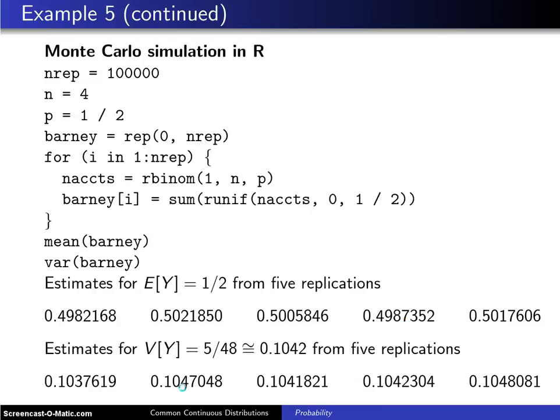On the next page is a Monte Carlo simulation in R to see if this mean and variance of one-half and five-forty-eighths are correct, and here is the simulation.